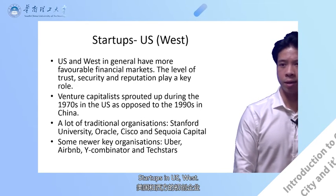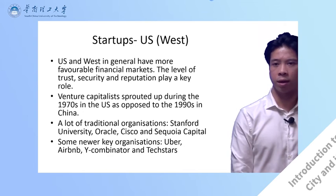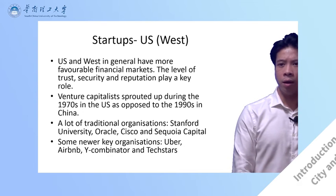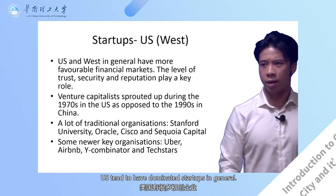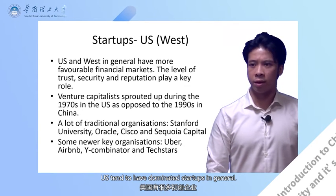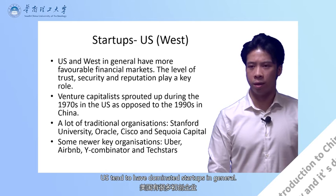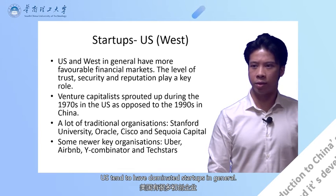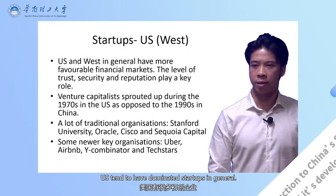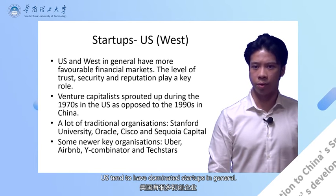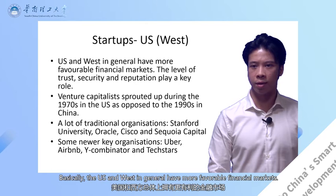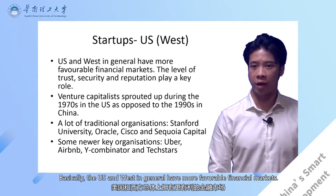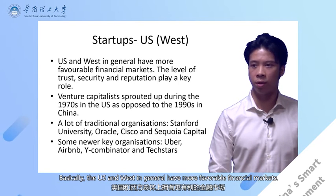Startups: the US and West in general have tended to dominate startups. The US and West in general have more favourable financial markets. A key thing about this is the experience, and also the level of trust, security, and reputation play a key role in why these areas are financial elites — for example, cities like London and New York are some of the top financial cities in the world.